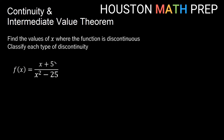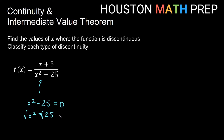Let's look at another example, but here I just have an equation instead of a graph. We want to find the values of x where it's discontinuous. For a rational function, a discontinuity is likely to occur when the denominator is zero. So we want to figure out when x squared minus 25 equals zero. Adding 25 to both sides gives x squared equals 25, and taking the square root — don't forget the plus or minus — gives x equals positive or negative five. That's where it's discontinuous.